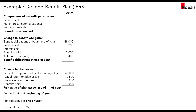In this example, we look at the components of the periodic pension cost for a defined benefit plan under IFRS for 2019. The components include service cost, net interest expense or income, and remeasurements from OCI, summing to the total periodic pension cost. The beginning benefit obligation is 48,000; service cost is 280; interest cost is blank; benefits paid is 2,000; actual loss or gain is 400. For plan assets: beginning fair value is 43,000; actual return is 2,006; employer contributions are 900; benefits paid is 2,000. The discount rate is 5%.